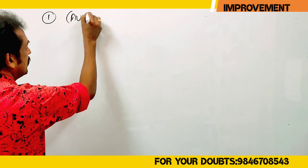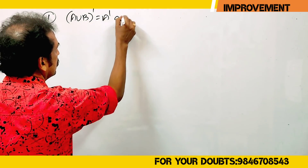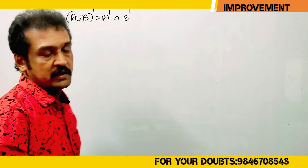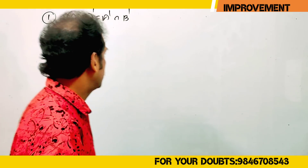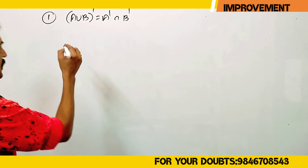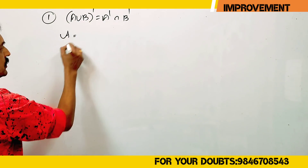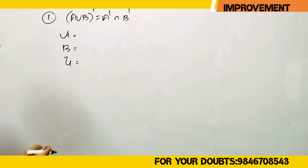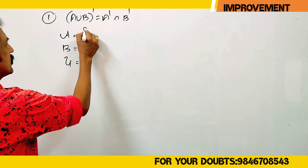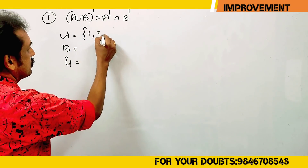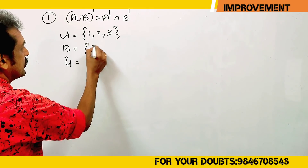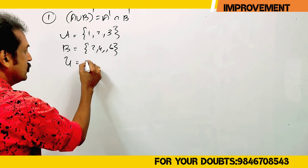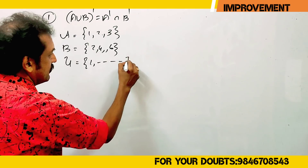Let's verify this: A union B whole complement equals A complement intersection B complement. Let's start with a question. We have three sets: A is {1, 2, 3}, B is {2, 4, 6}, and U is {1 up to 7}.